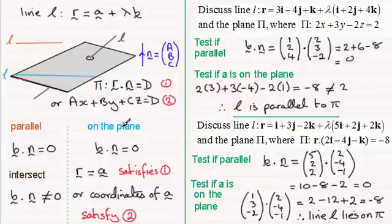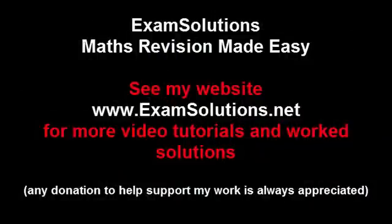I hope that's given you some idea how you can determine the nature of a line in relation to a plane. But what I haven't done in this video is given you an example of when B dot N does not equal zero. In other words, if that's the case, the line intersects. But you can check this out in my next video in this series, where I show you how we find the point of intersection if a line intersects a plane. Thank you.